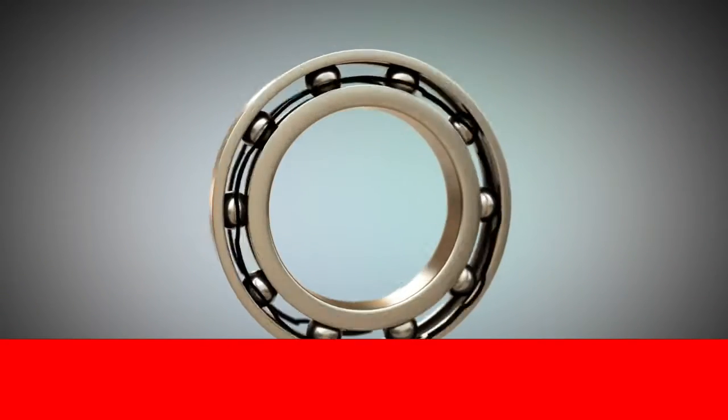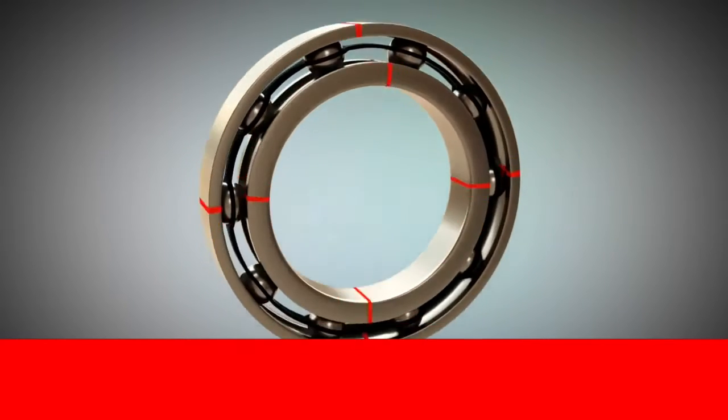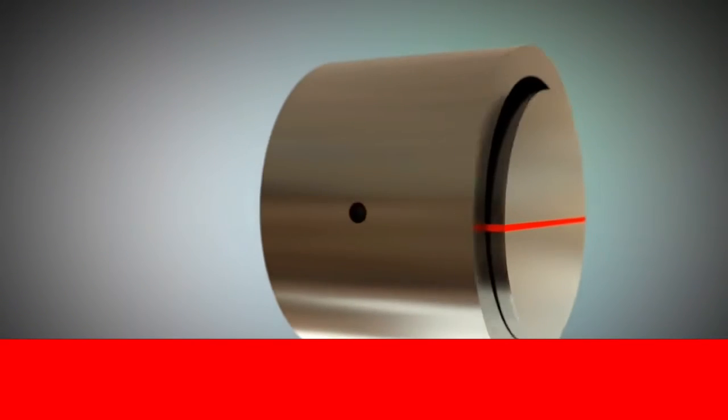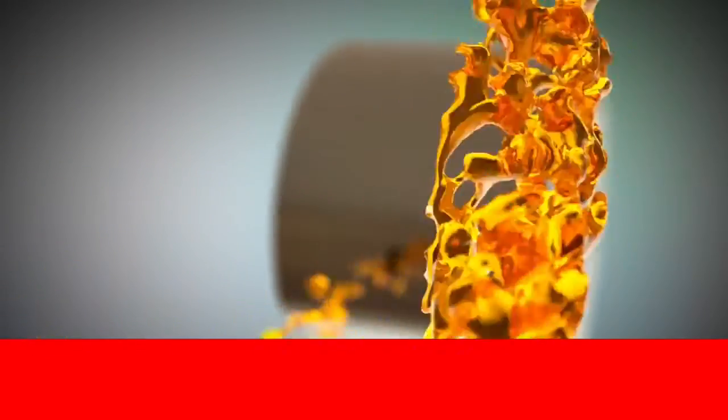Unlike roller bearings, which use roller elements to move the inner and outer ring against each other, plain bearings use oil to form a lubricating film. The lubricating film is created by the two contact surfaces that move.